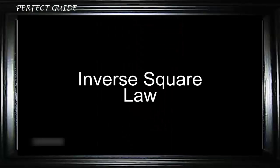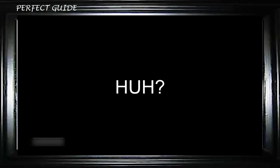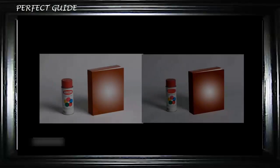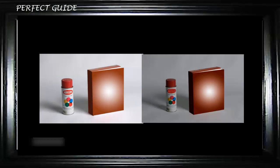One more technical consideration is called the inverse square law. When talking about the fundamentals of lighting, this is important. The inverse square law refers to the illumination of a light source and how it varies inversely by the square of the distance from the light source. In layman's terms: when you move a light away from the subject, the light is going to fall off.